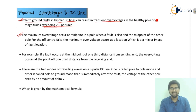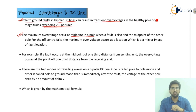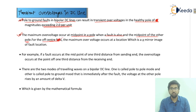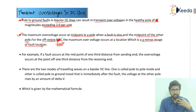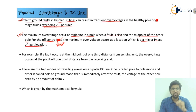The maximum overvoltage occurs at the midpoint of the pole, so at the midpoint of the pole the maximum value is going to occur. When the fault is also at the midpoint of the other pole, for off-center faults the maximum overvoltage occurs at the location which is the mirror image of the fault location — meaning the mirror image of wherever the fault has occurred.